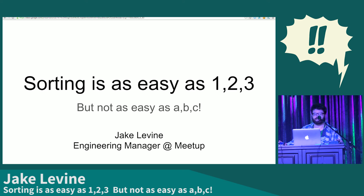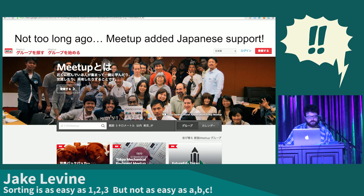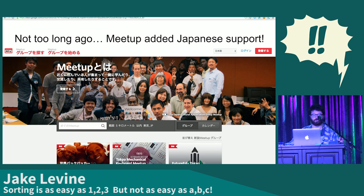My name is Jake Levine, and I'm an engineer at Meetup. Last year, Meetup added support for Japanese. This was a fascinating project in many ways, and this presentation is about one of the more interesting things that we encountered.